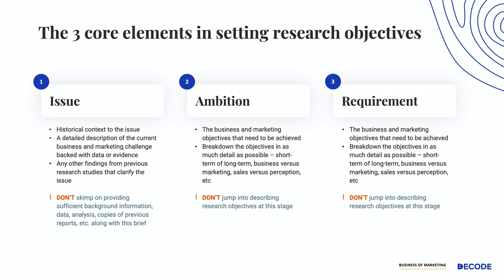In the ambition section, you need to write about the business and marketing objectives that need to be achieved. Break down the objectives in as much detail as possible — what is short term versus long term, what is business versus marketing, what is a sales problem versus a perception problem. Based on all of this, write down the objectives in as much detail and breakdown as you can. Do not jump into describing the research objectives at this stage.